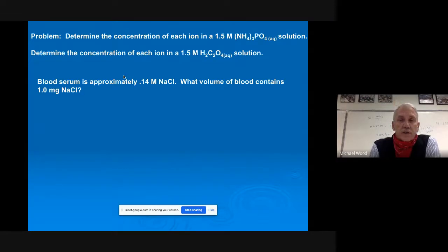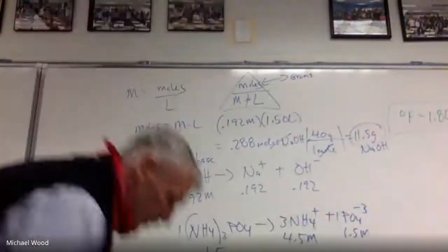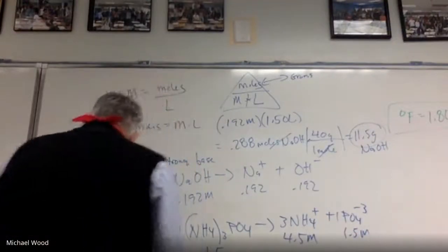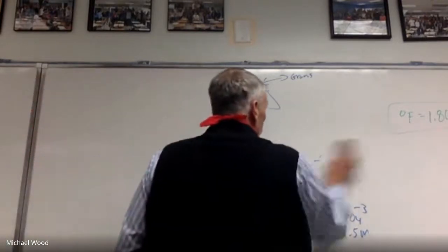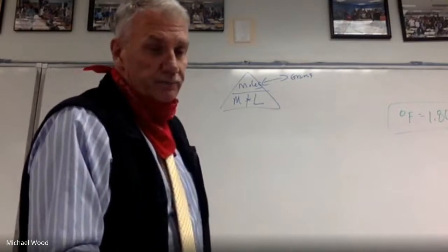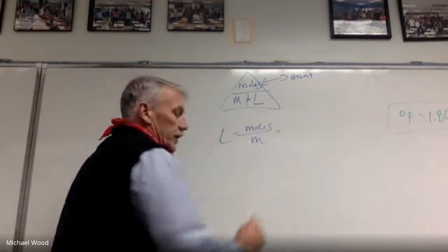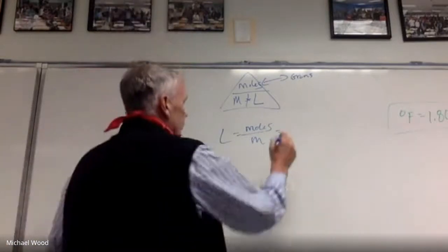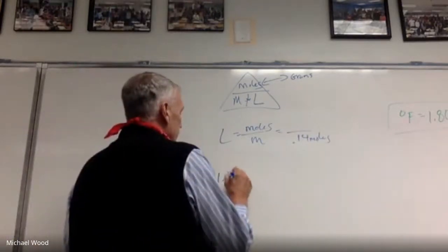Blood serum is approximately 0.14 molar NaCl. What volume of blood contains one milligram of NaCl? We're trying to find volume in liters. Volume equals moles over molarity, and molarity is 0.14. The moles need to be determined from the one milligram given, so I need to convert milligrams to grams first.